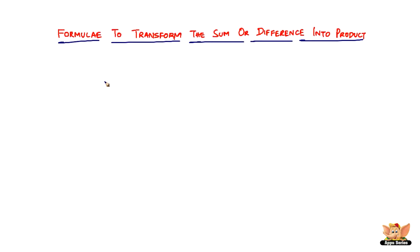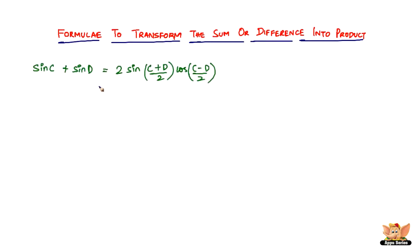Here is a list of formulae that will help us transform the sum or difference into product. The first formula is: sine C plus sine D equals 2 sine of (C plus D) by 2, times cosine of (C minus D) by 2. We are transforming this sum into a product of two trigonometric functions.